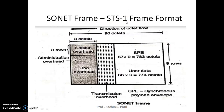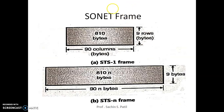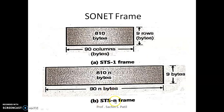Today we have seen the SONET STS frame structure. The STS-1 synchronous transport signal has 9 rows × 90 columns, with each block containing 8 bits, at 8000 frames per second — giving a frame rate of 9 × 90 × 8 × 8000 = 51.84 Mbps. For STS-n, only the columns change: 90 × n (e.g., STS-3 → 90 × 3, STS-5 → 90 × 5), while the number of rows remains 9.